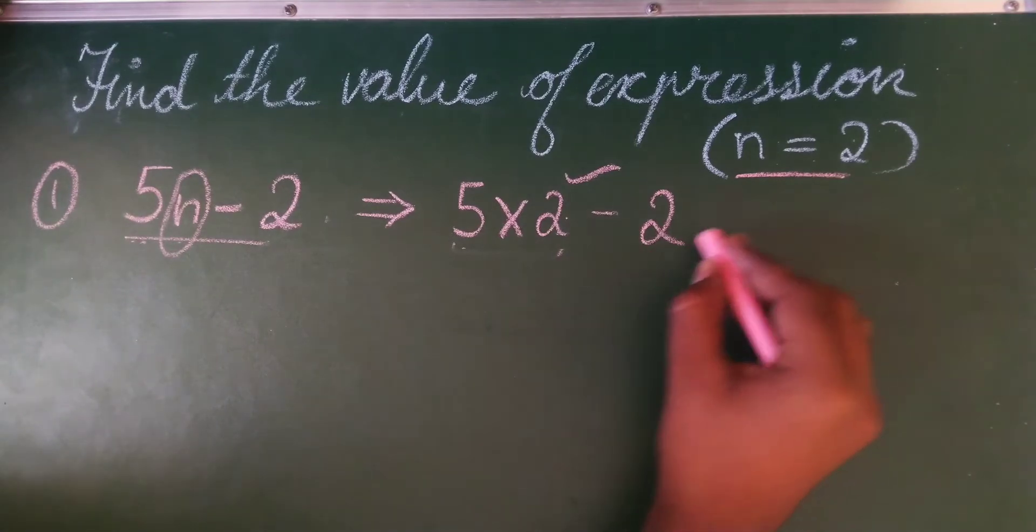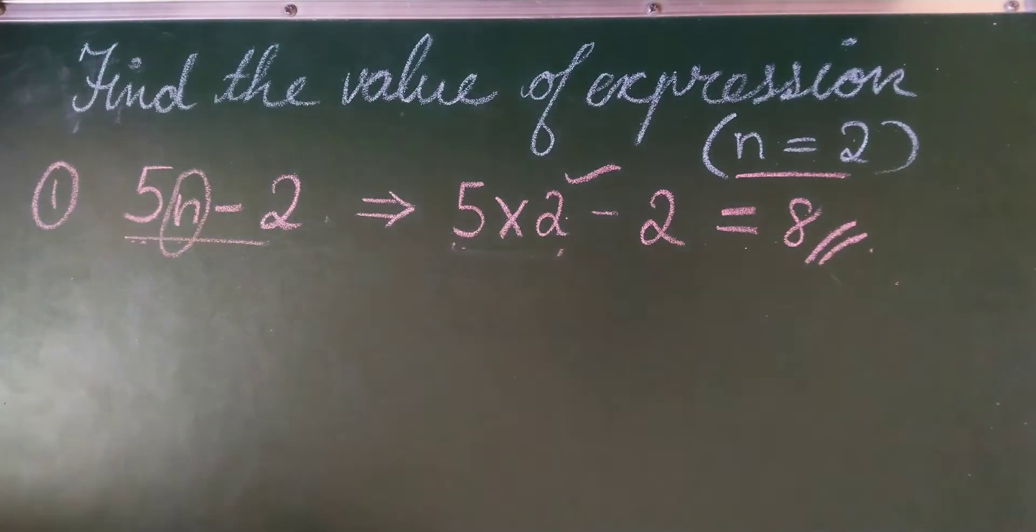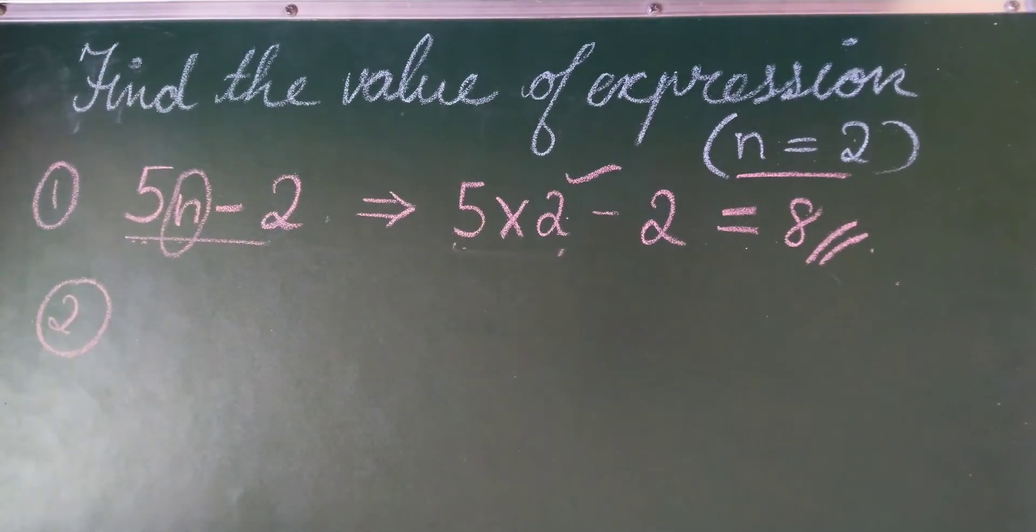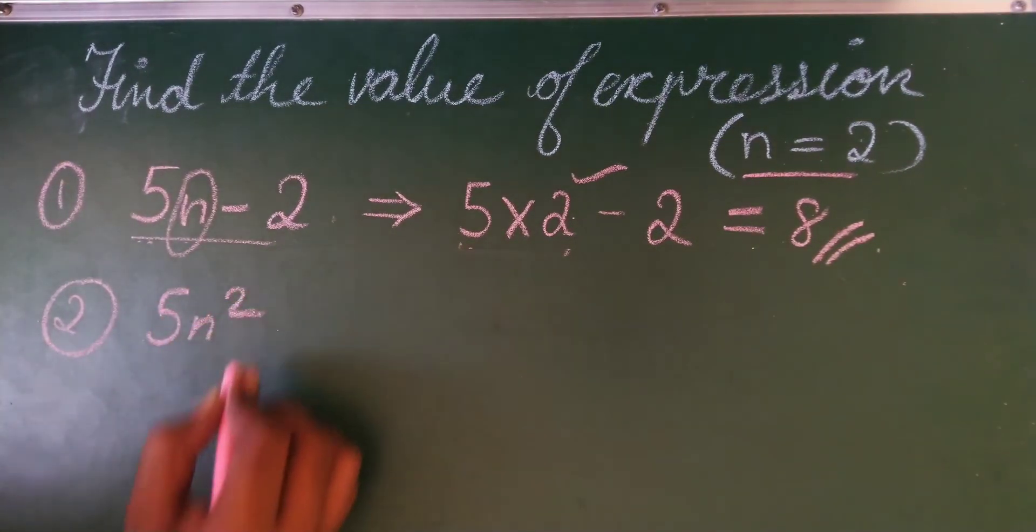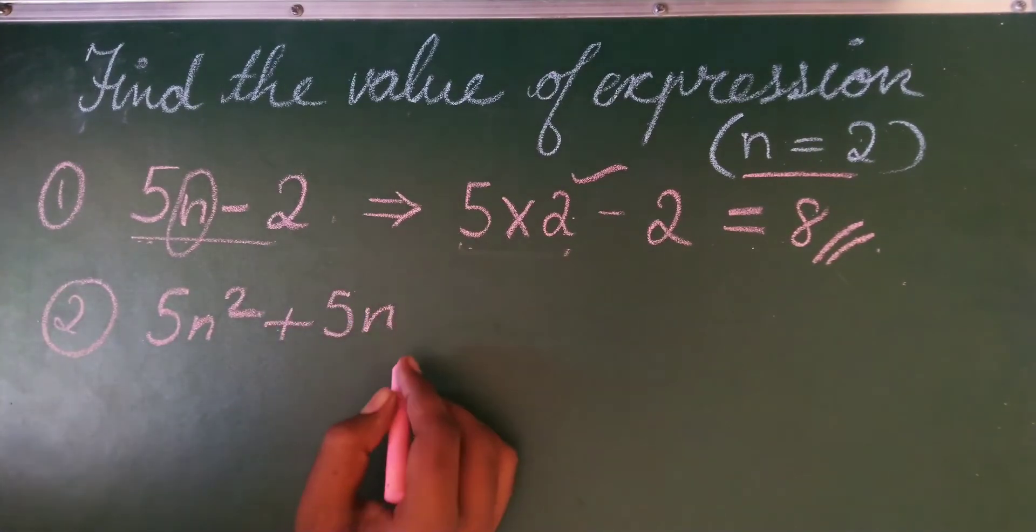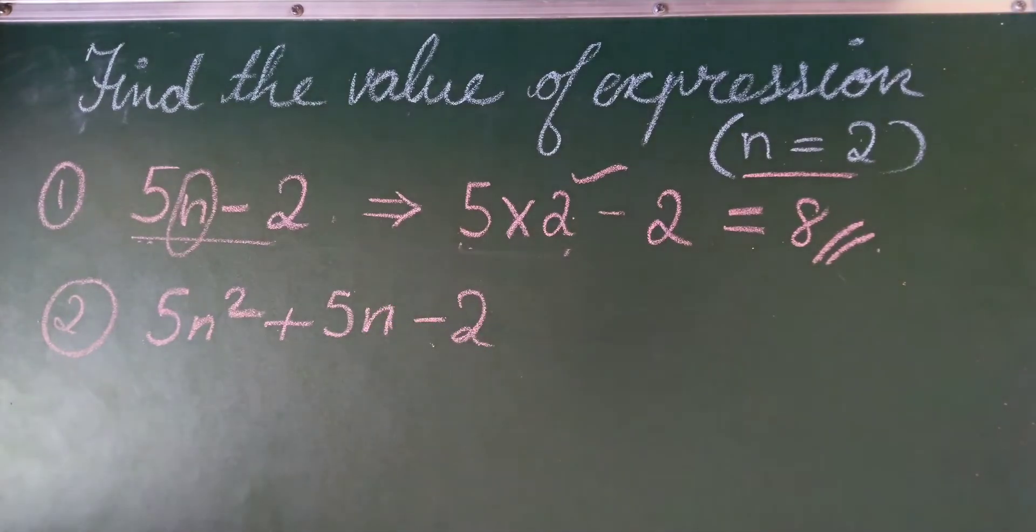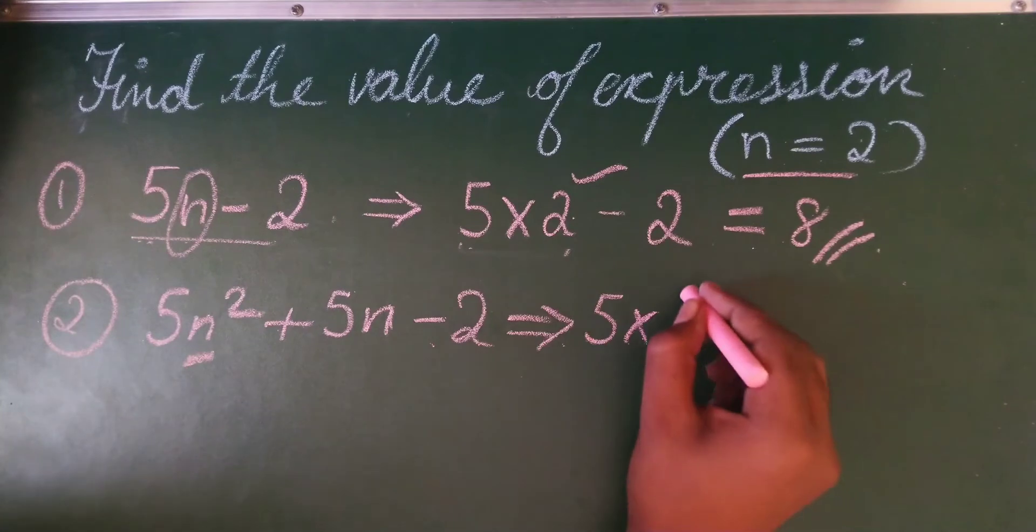Now moving to the second part. Second question will take a little bit complicated one: 5n squared plus 5n minus 2. So in this you have to place the value as 2. So I can write 5 into n squared, so I have to multiply 2 squared.